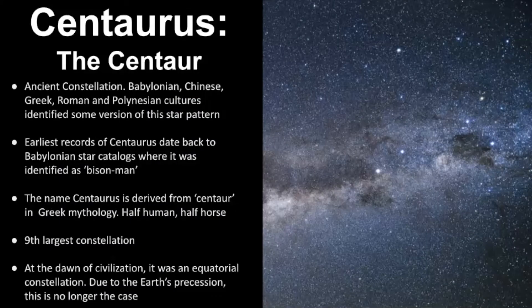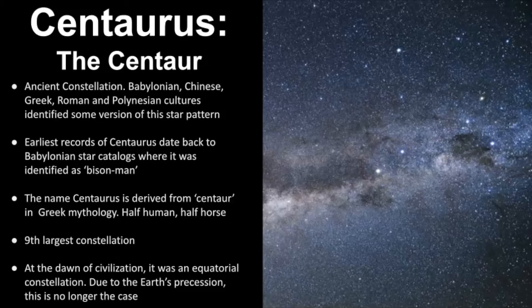Centaurus is represented as a centaur, and it is classified as an ancient constellation. The Babylonians, Chinese, Greeks, Romans, and Polynesian cultures, and probably many other cultures throughout the world at least identified some version of this star pattern. But the earliest records date back to the Babylonian star catalogs, and there it was identified as a bison man. The name Centaurus is derived from centaur in Greek mythology, which is a half-human, half-horse.